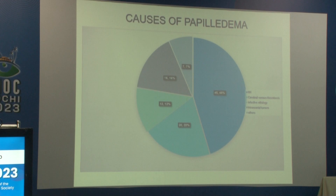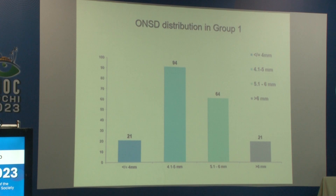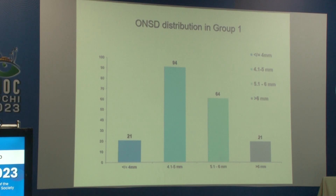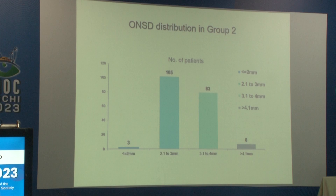Among 200 eyes in Group 1, 94 eyes had an ONSD value of 4.1 to 5 mm. Group 1 predominantly had ONSD values greater than 4 mm, whereas in Group 2, the majority of patients had ONSD values less than 4 mm.